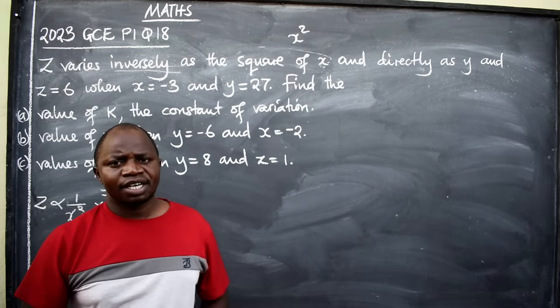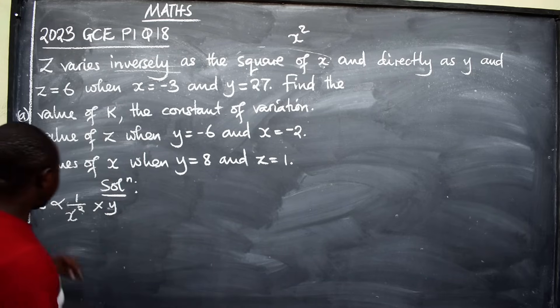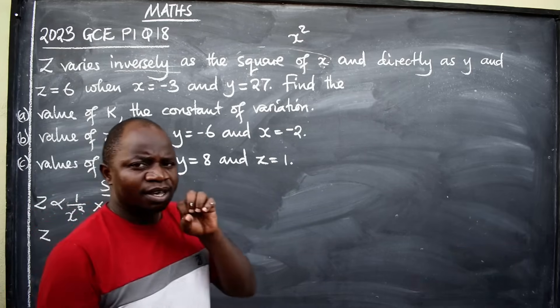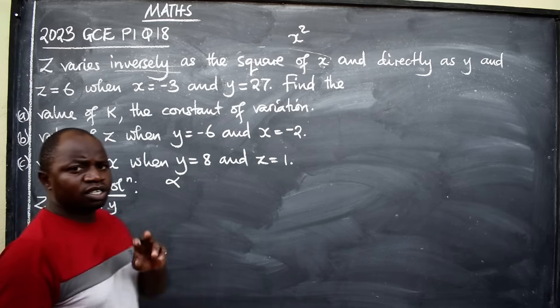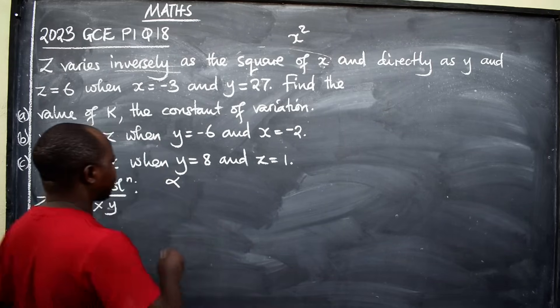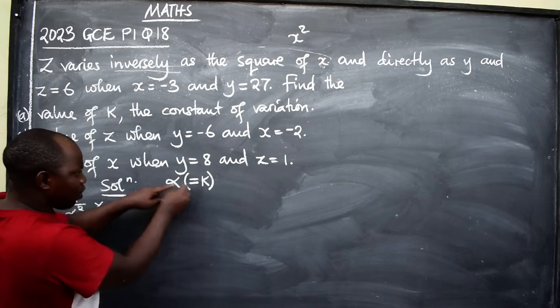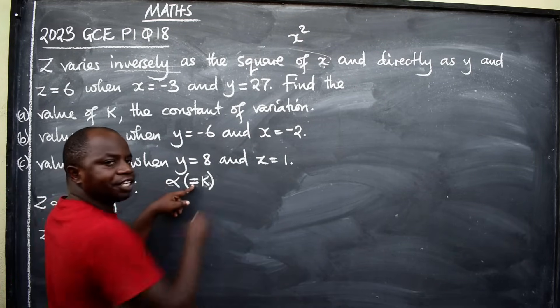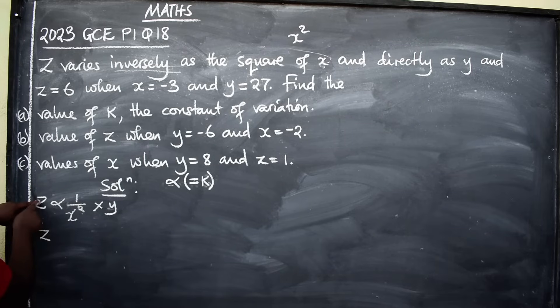The next is to get rid of this variation symbol. On the variation symbol, I'm going to remove that because I need equal sign. This variation symbol that you are seeing produces two mathematical signs: equal sign and k. These always replace the variation symbol, equal and k, where k is the constant of variation. I'll remove this and put these two: equals and k.